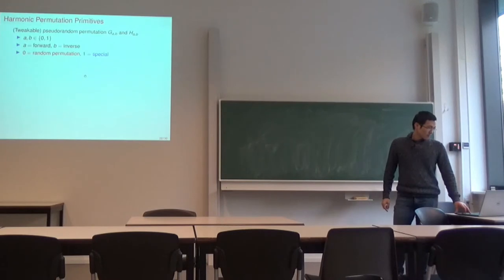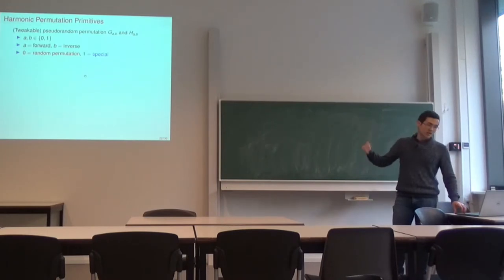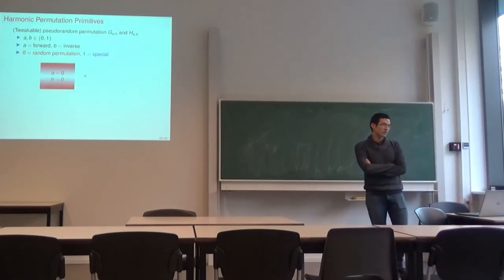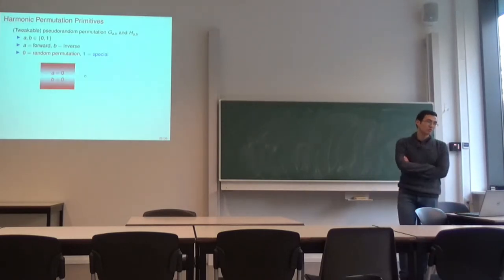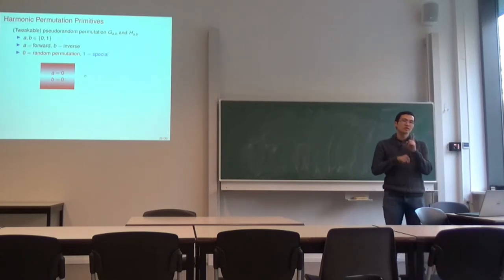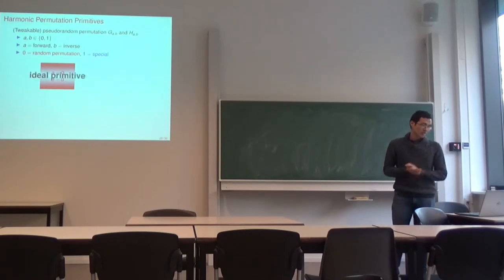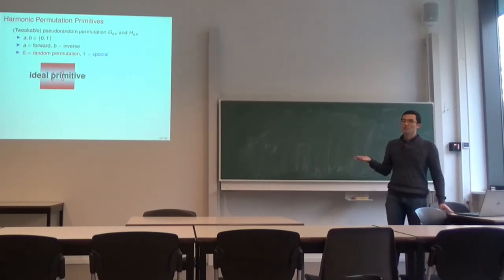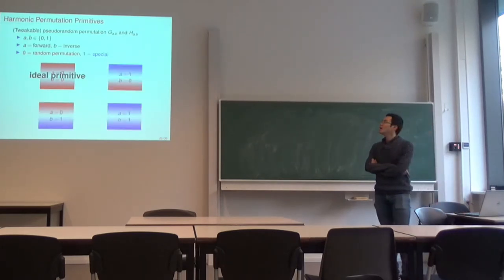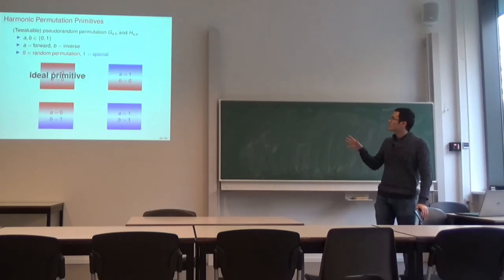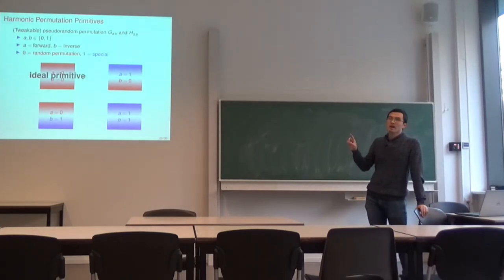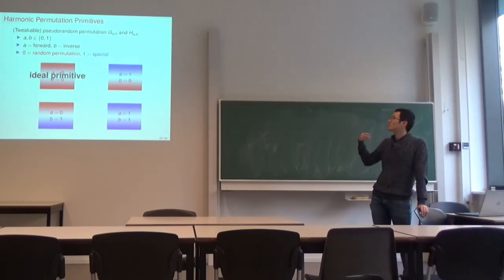By different combinations of A and B, we get four different cases. When A and B are both 0, both directions are generated as a random ideal permutation — so it's the ideal primitive, nothing special. For the other three cases, at least one direction is generated using the special technique, which makes them more interesting.